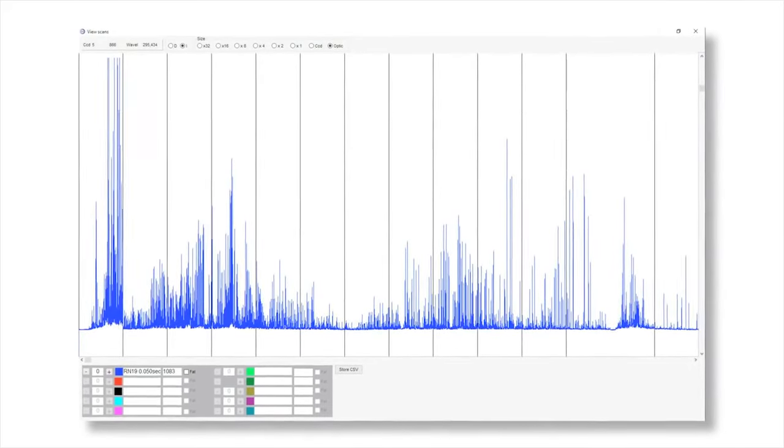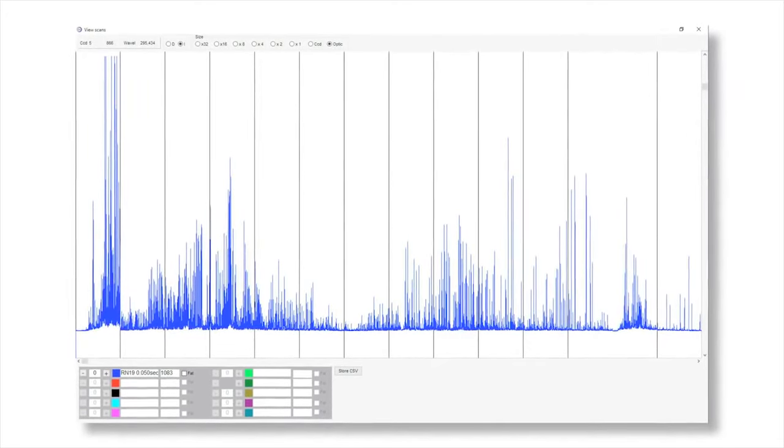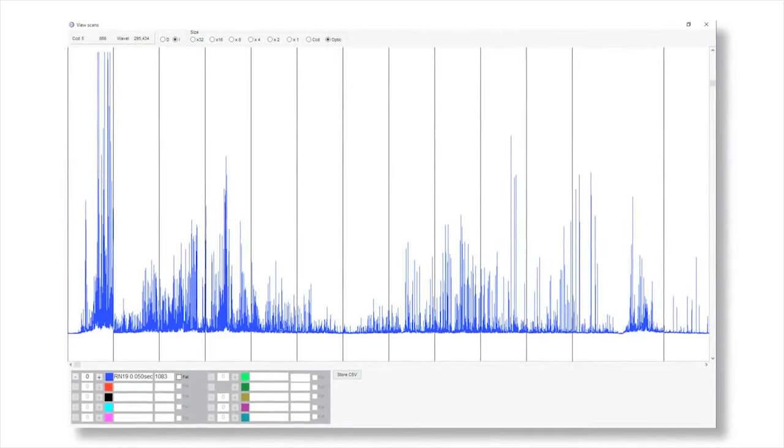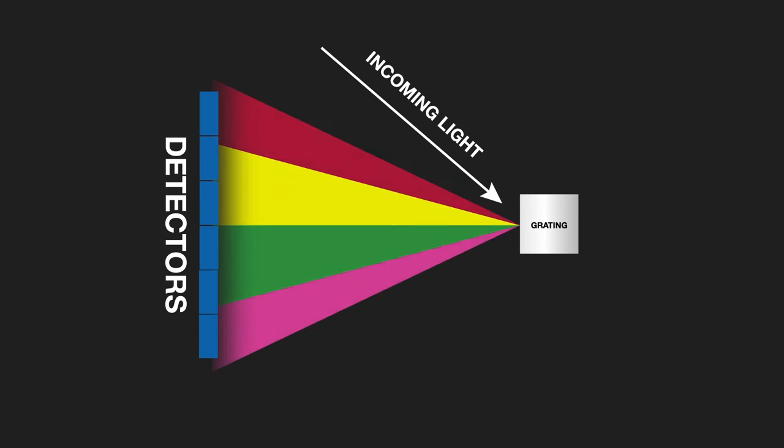For example, iron emits just over 8000 different wavelengths, so choosing the optimum emission line for a given element in a sample is important.